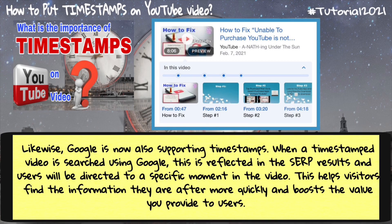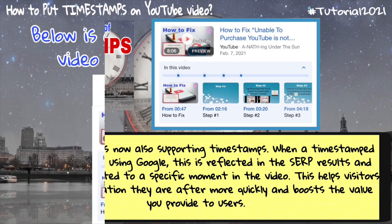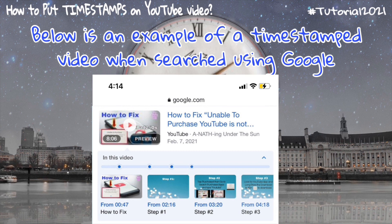Likewise, Google is now also supporting timestamps. When a timestamp video is searched using Google, this is reflected in the SERP, or search engine results page, and users will be directed to a specific moment in the video. This helps visitors find the information they are after more quickly and boosts the value you provide to users. Below is an example of a timestamp video when searched using Google.